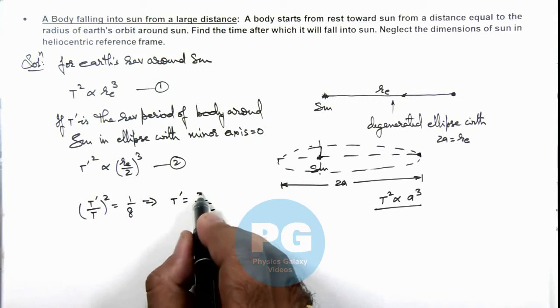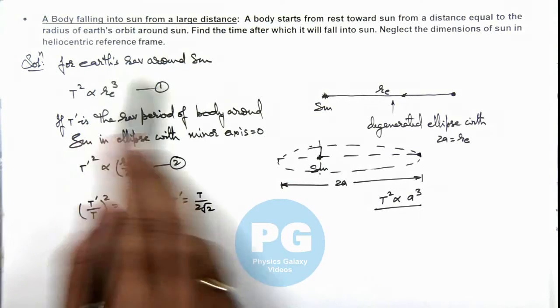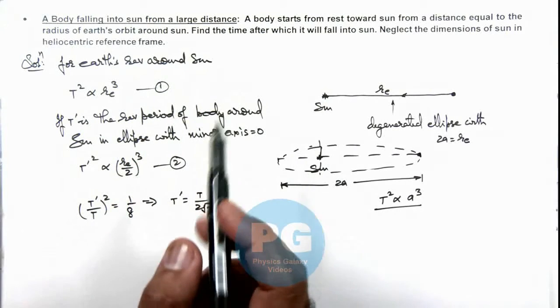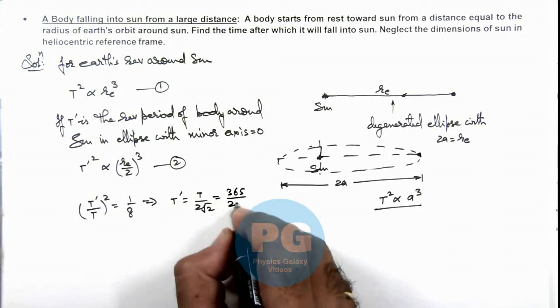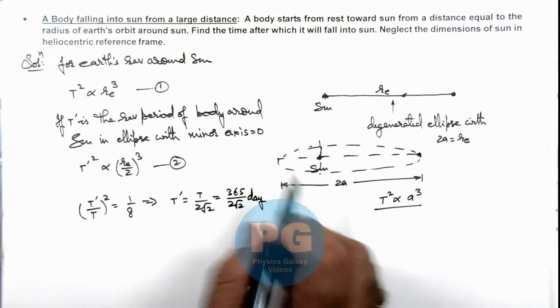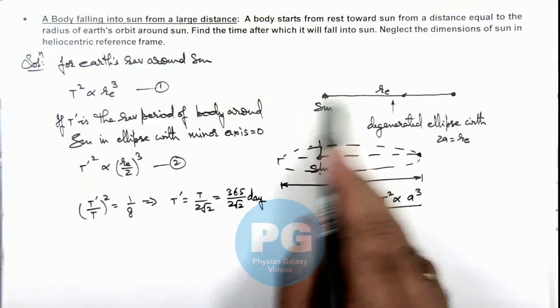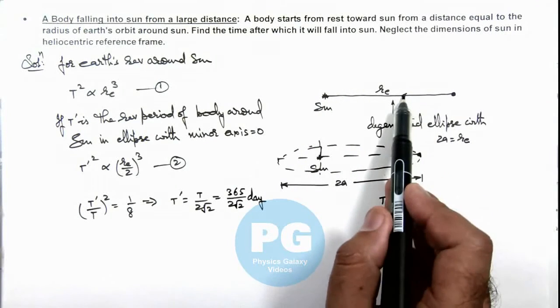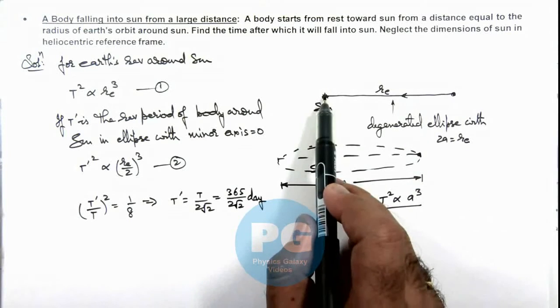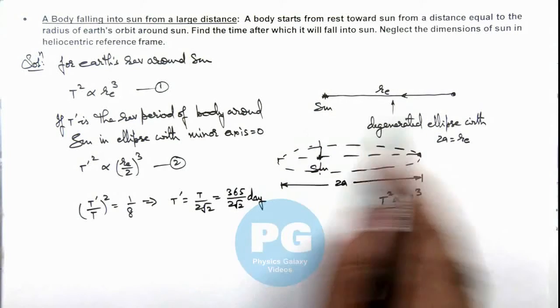And the time period of earth's revolution around sun we know it is 365 days, so this is 365 by 2 root 2 days. This much time the body will take in revolving round the sun in this elliptical path. But we are required to find the time in which the body will be falling into the sun, that will be half of the period.